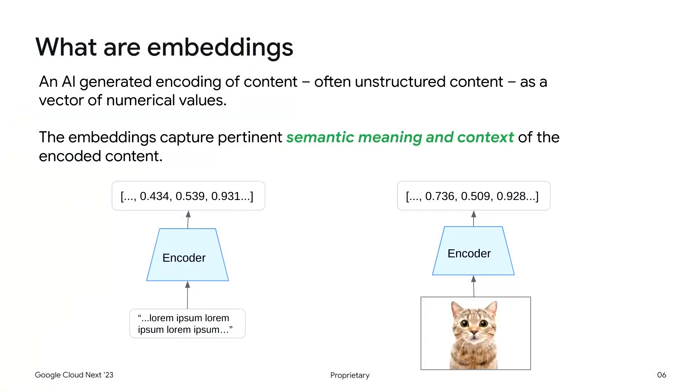Typically, the content that is encoded as embeddings is unstructured content — text, images, and so forth — but it can actually be any type of content. A good embedding generating model will encode rich semantic information about the content in the embedding vector. The Vertex AI text embeddings API takes text as input and returns an embedding vector of dimensionality 768 — that's 768 numerical floating point values. The breadth and depth of nuanced semantic information captured by that embedding vector is incredible.